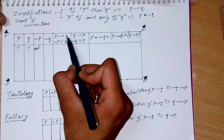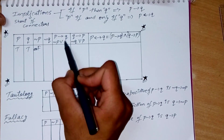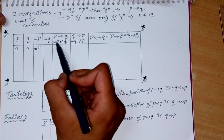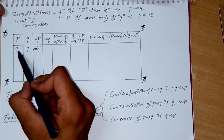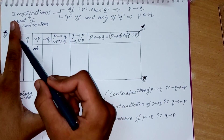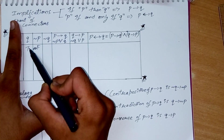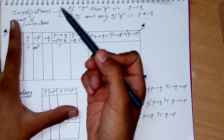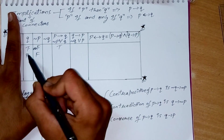P implies Q can also be written as negation of P OR Q. Using the OR analogy with two questions: negation of P is F and Q is T — one of them is true, so the answer is true. If negation of P is T and Q is F, the answer is false. If both are false, the answer is false.